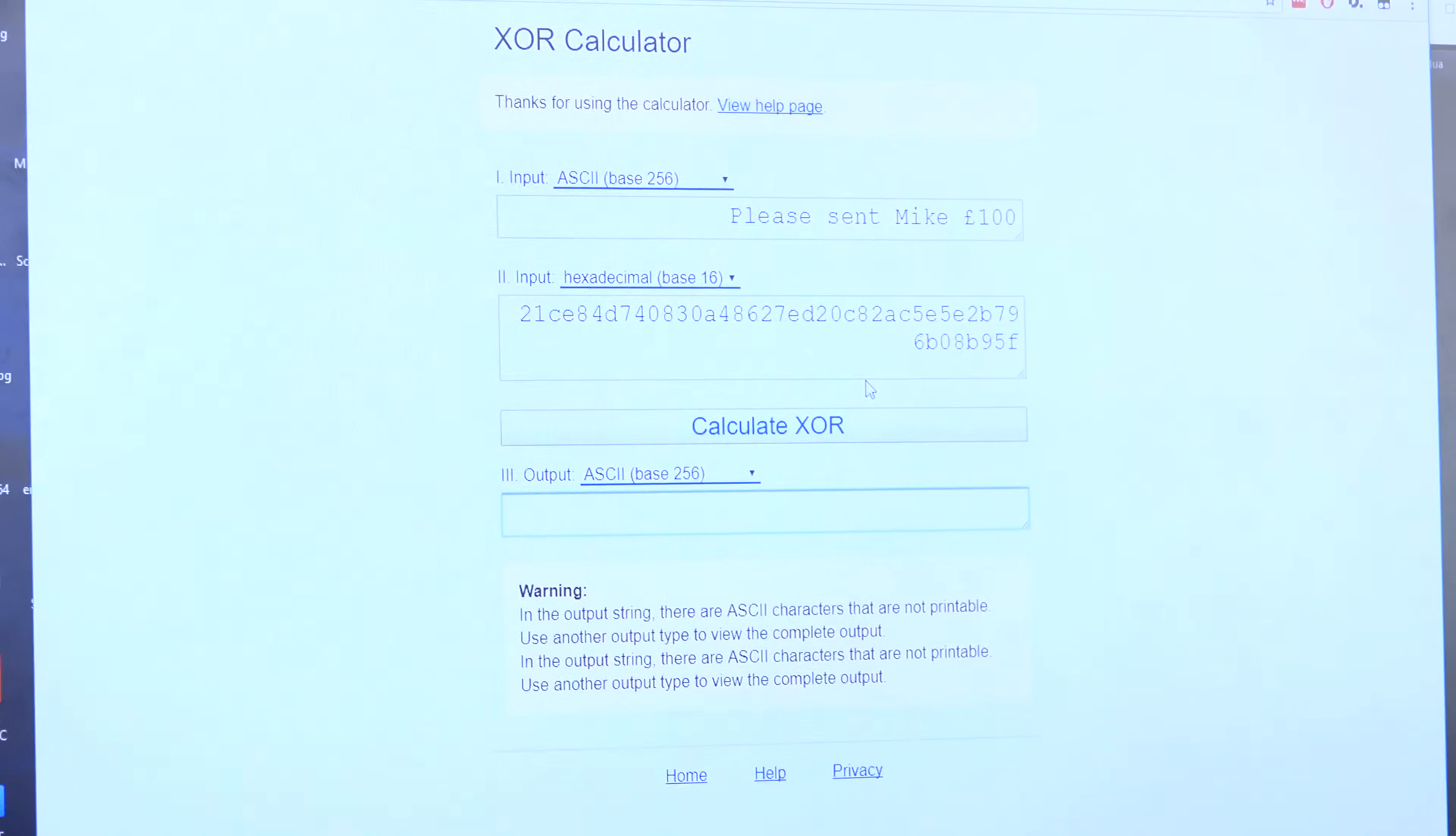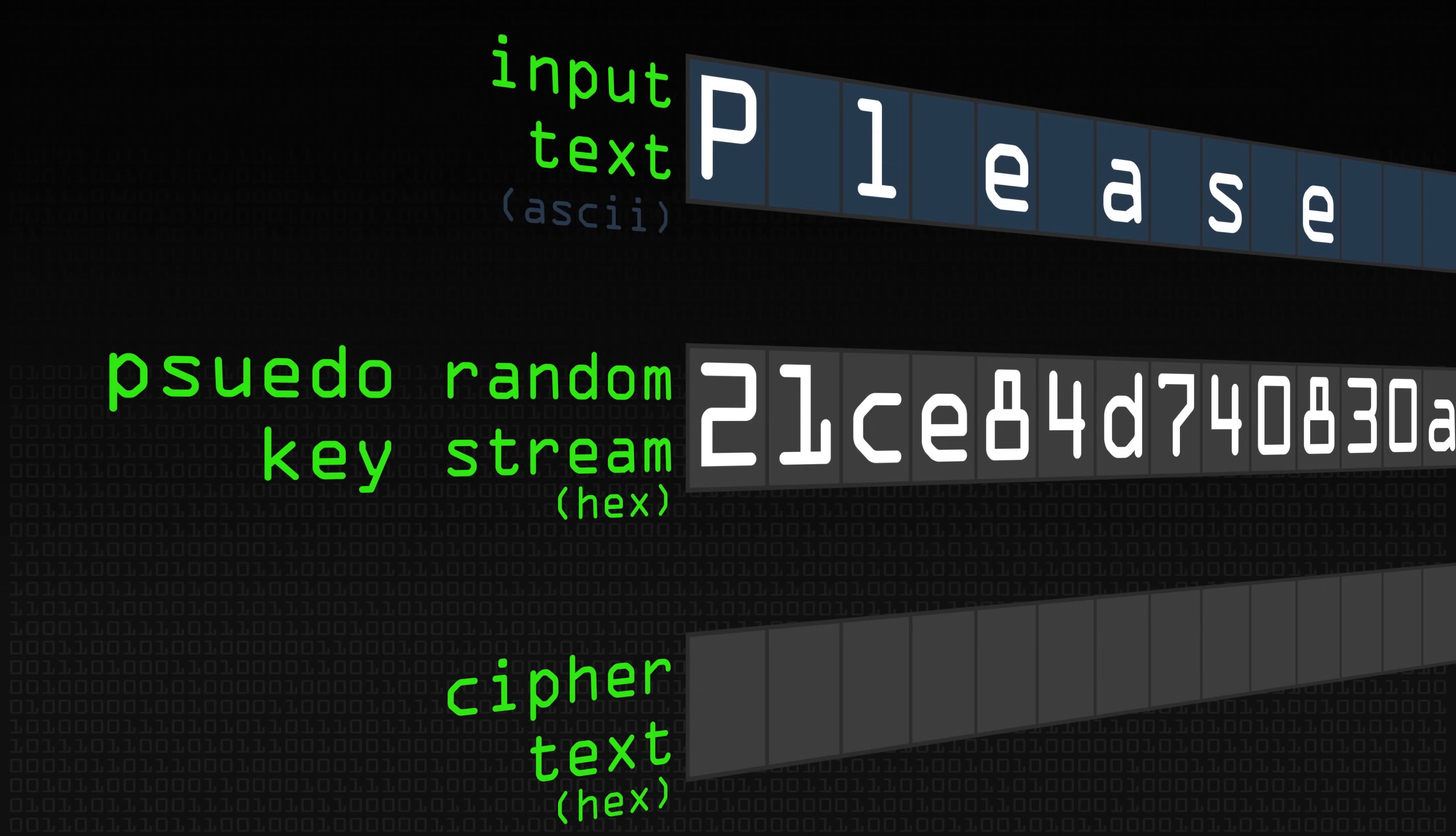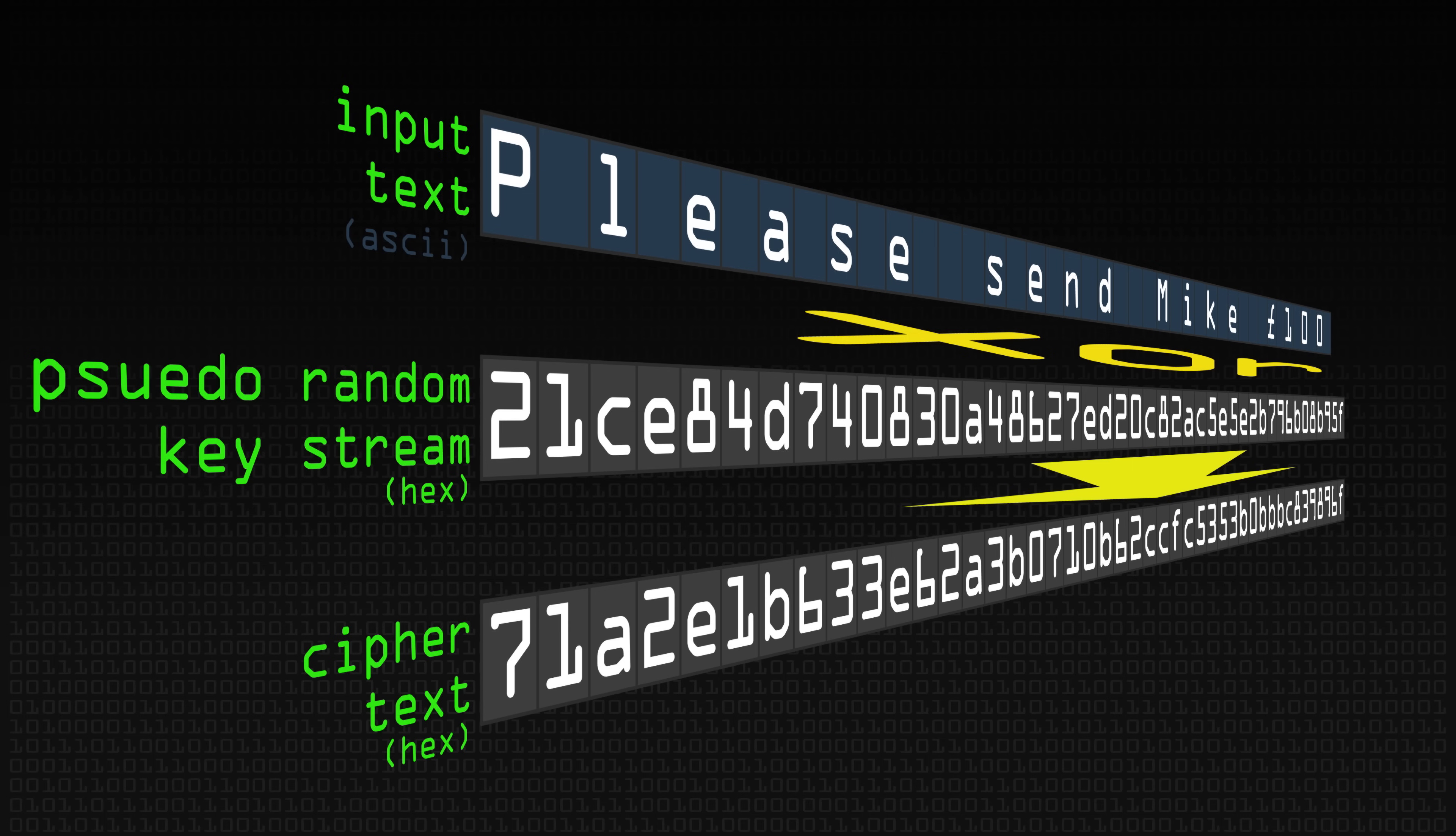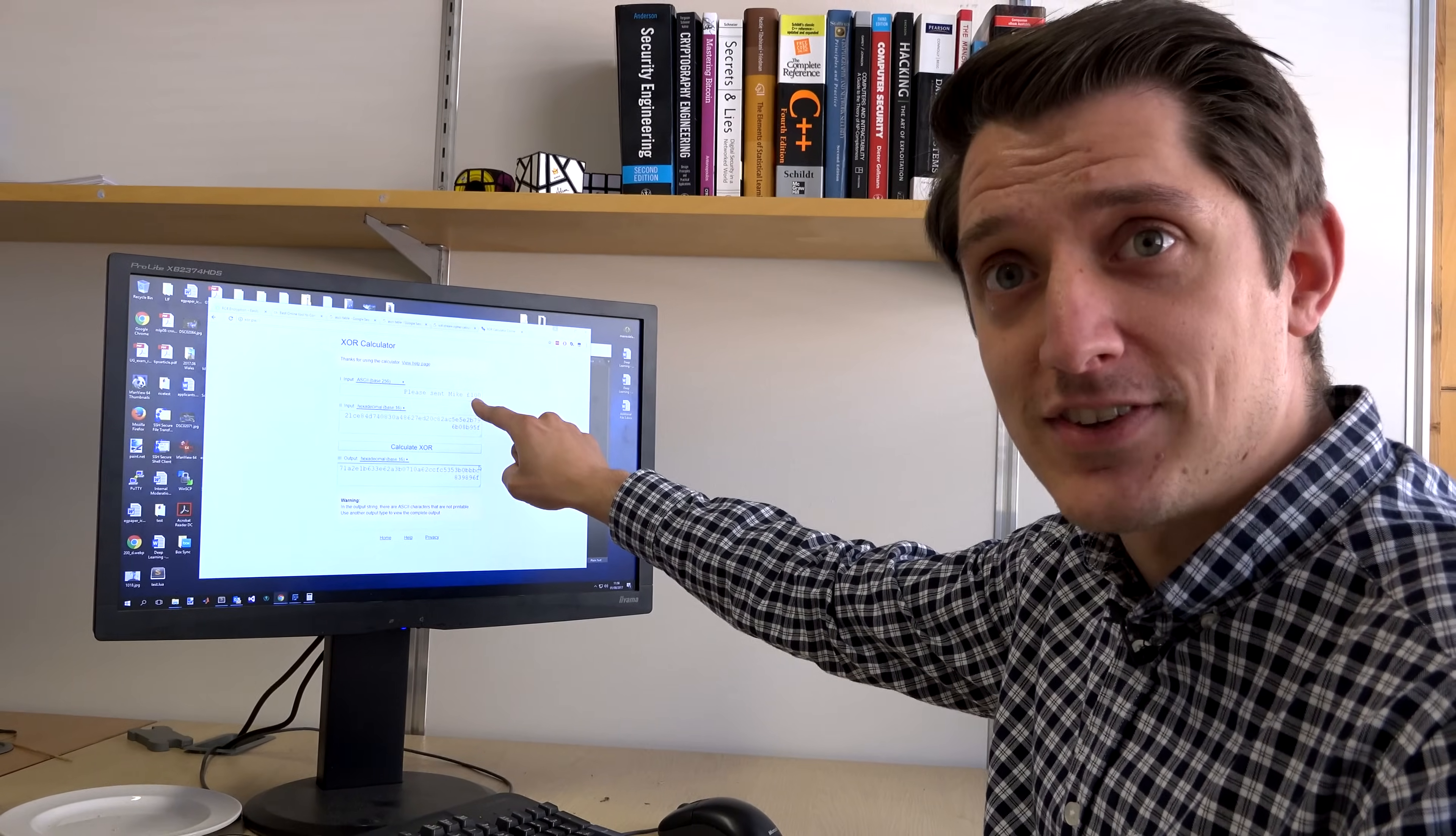So if I calculate the XOR on this, we get a message in hexadecimal which is completely nonsense. This is our encrypted message. If you view this as ASCII, it won't say this and it won't say anything useful at all. The problem is that if I start changing the bits here and we reverse this process for decryption, we can actually change the amount I get sent.